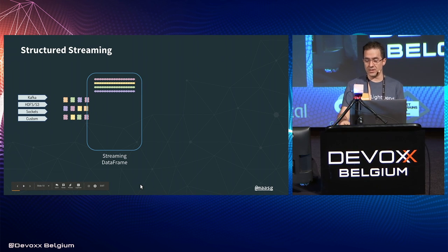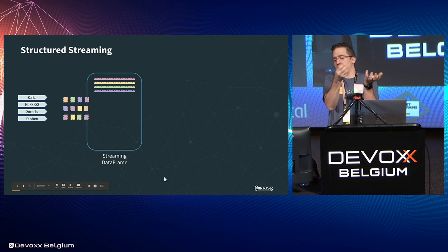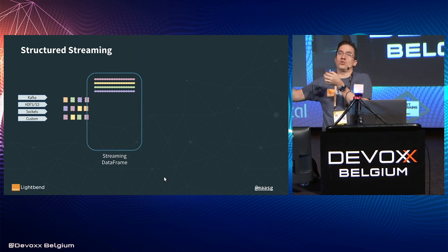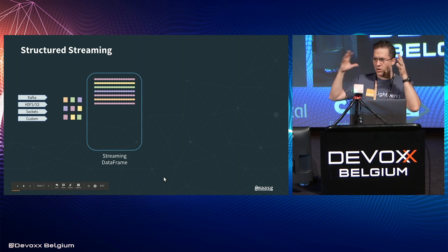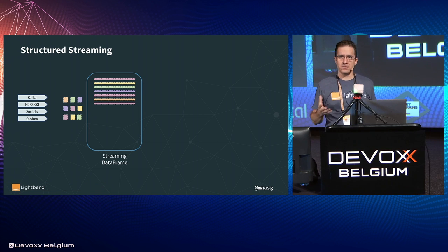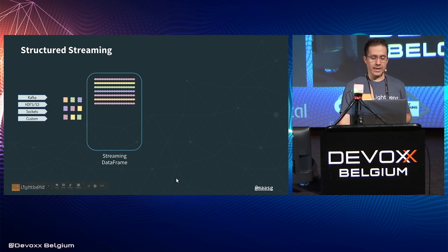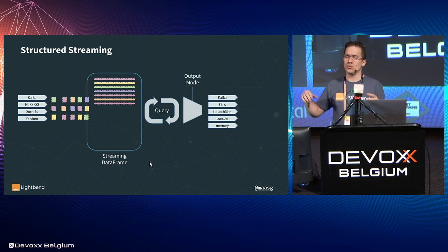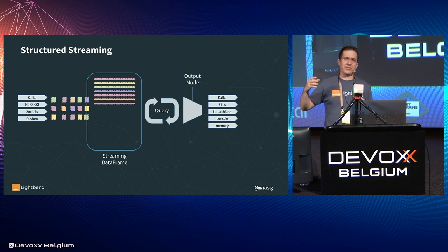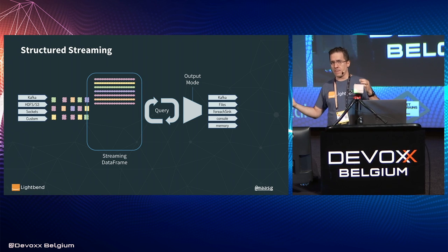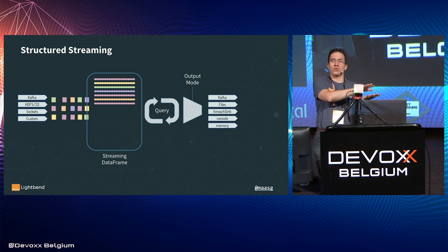That's the key idea of data frames. Data comes in, you give it a schema — that's very important because it gives you access to each field. Data piles up virtually on a conceptual table called the streaming data frame. You define a query: on one side data is coming in, on the other side you have a query representing what you want to extract. The optimizer looks at your query and determines how much data it needs to satisfy it.